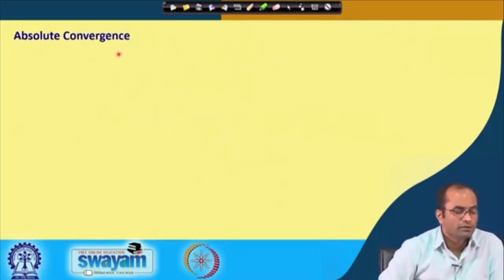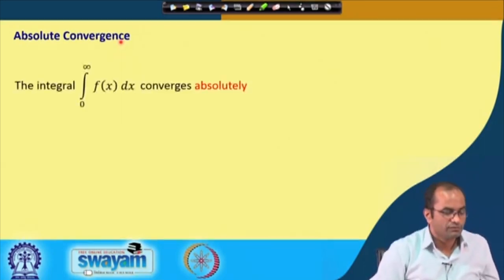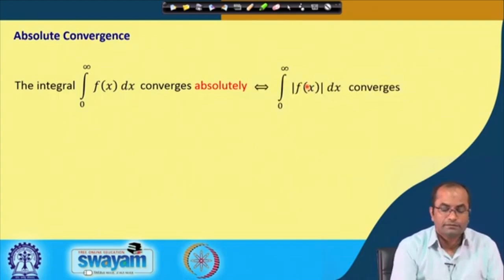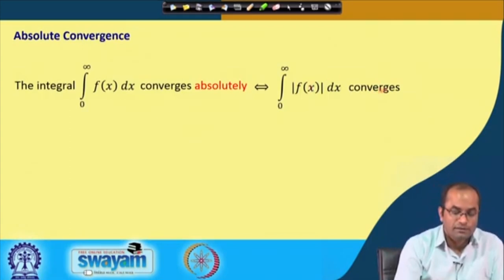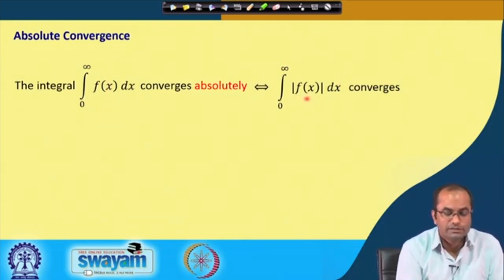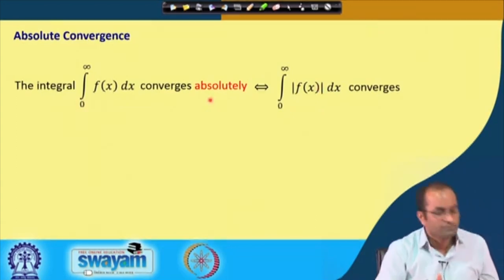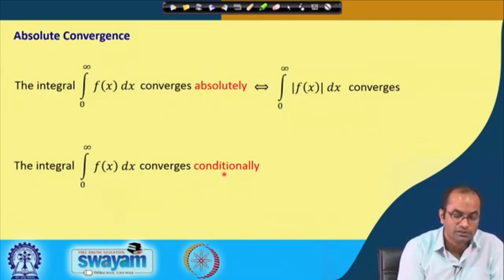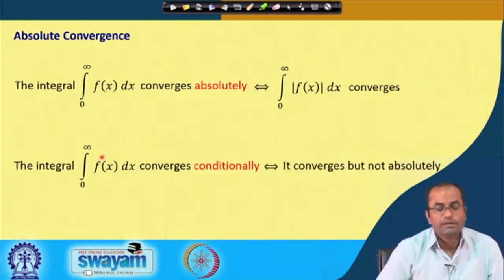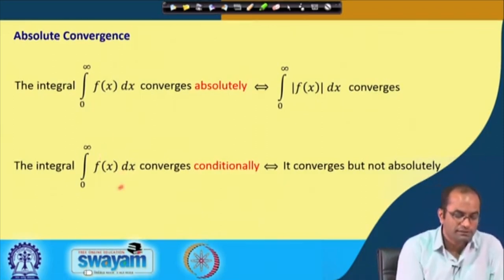An important concept here is absolute convergence. An integral converges absolutely if the integral of the absolute value of the integrand converges, meaning we replace the integrand by its positive values. There is also the term conditional convergence: an integral converges conditionally if it converges but does not converge absolutely.